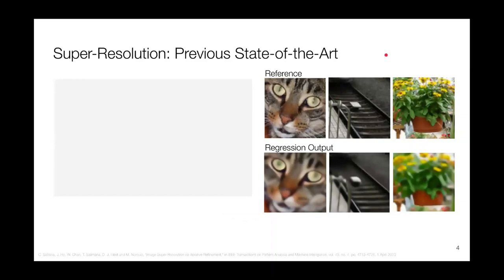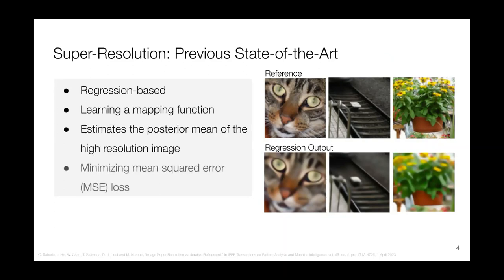Some of the early work on super resolution was largely regression based. This simply learned a mapping function from the low resolution input to the high resolution output. This algorithmic approach was good — we were able to increase the resolution — but as you could see, it more or less just took an average of the pixels, and we didn't gain any new information from the new pixels, even though the image was larger.